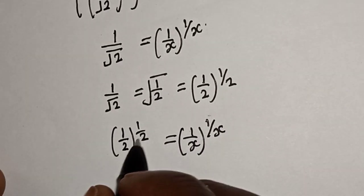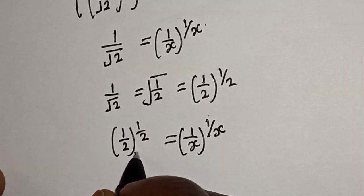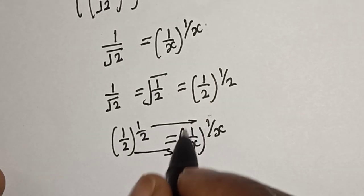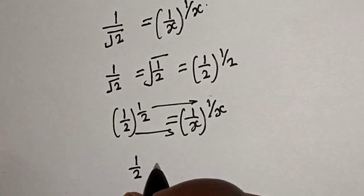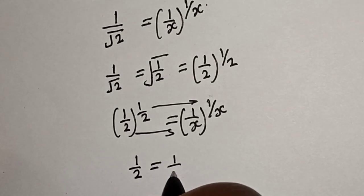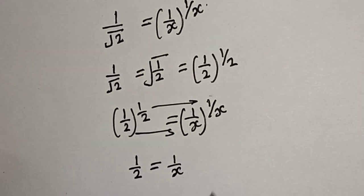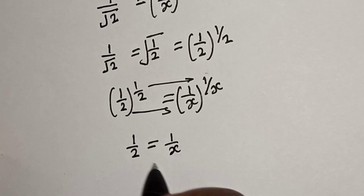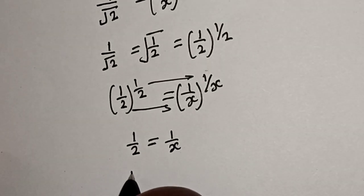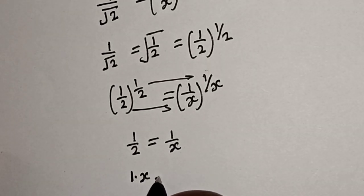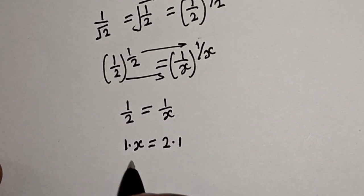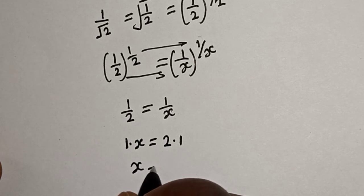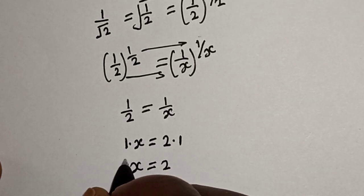By comparing, this equals 1 over s. Now if we cross multiply, we have 1 multiplied by s is equal to 2 multiplied by 1. Then 1 times s gives s is equal to 2 times 1, which is 2.